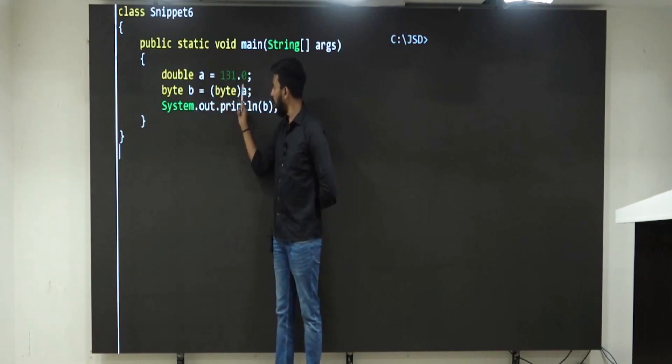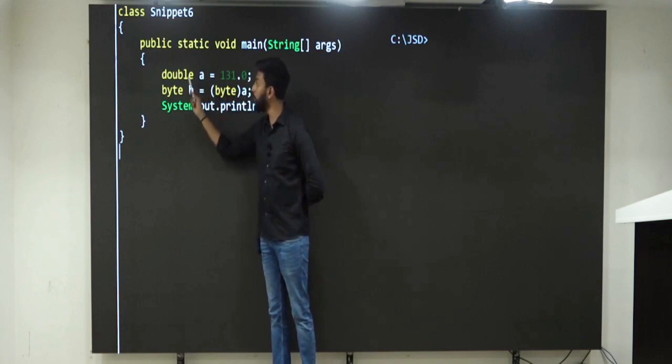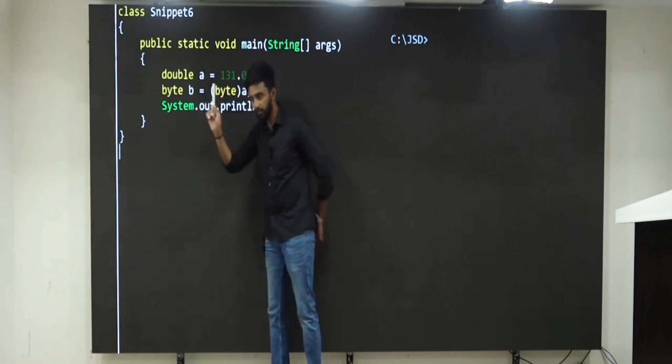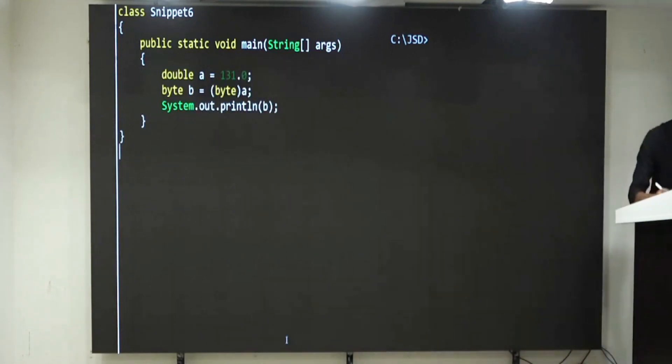Next line, whatever is in A, give it to byte. What is A? Double. Double, you are converting to byte and giving it to B, which means, I am just writing this for your reference. Watch it. This, my friends, is A. This is A.